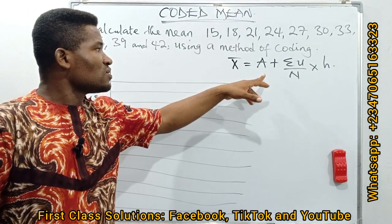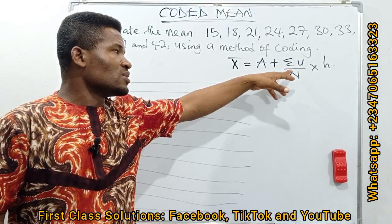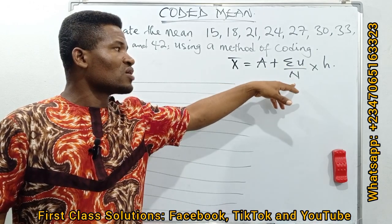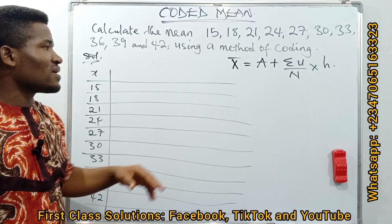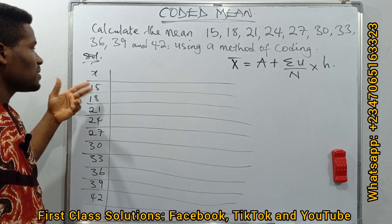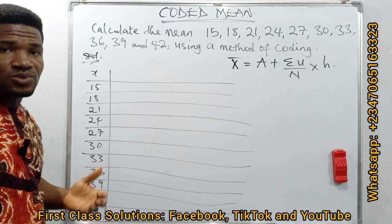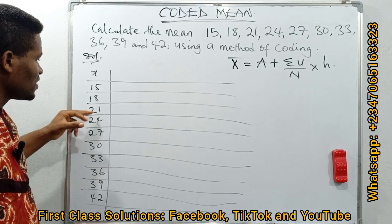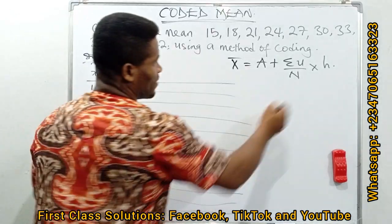From this formula, this will guide us into what we need to fill on this table. This is the coded mean. This is assumed mean A because we're going to be working with assumed mean. This is the sum of the coding factor over N, the number of observations. Then this H is the class size, but in this case we're not working with group frequency, so it's simply the difference between the first number and the second number—the common difference. If you look at these values, you can see that the common difference from each of the values is 3, so we have 3 as our H here.